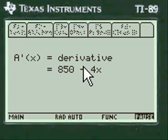We take the derivative of that. Here's the derivative: 850 minus 4x. Write that on your paper. You're going to look like a genius.